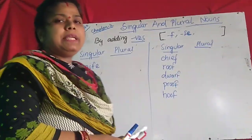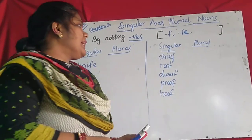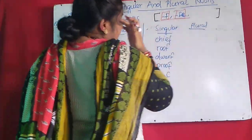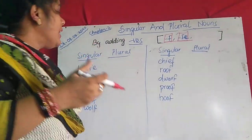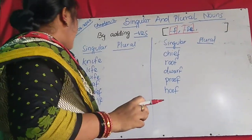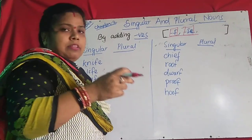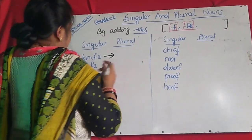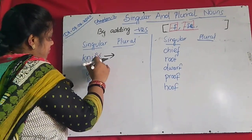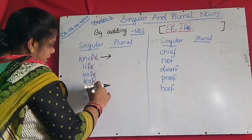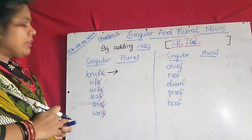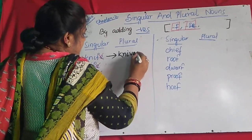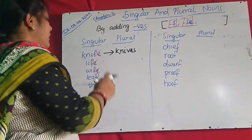The next rule is by adding VES. Where will you use VES? If the words are ending with F or FE, then when you change to plural, the F or FE will be cut and you will add VES. Suppose 'knife' — K-N-I-F-E — the word is ending with FE. So the F and E will be cut, and the plural will be K-N-I-V-E-S: 'knives.' The plural is formed by adding VES, but you will cut the FE first.